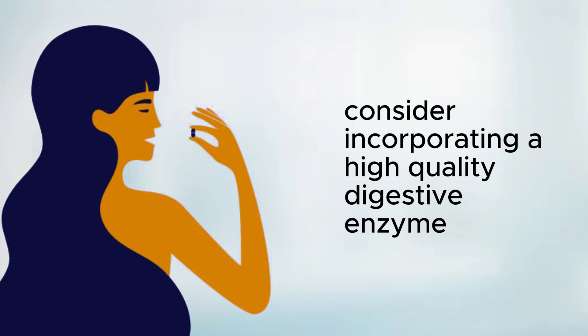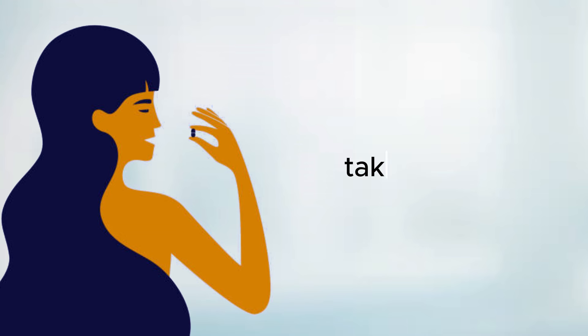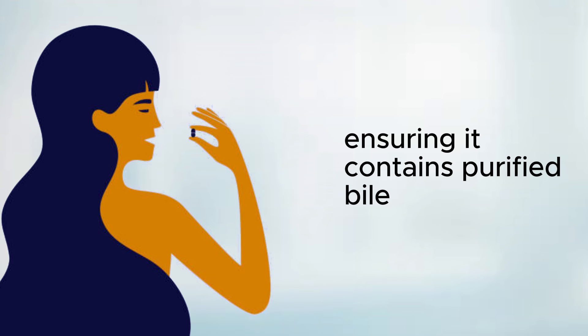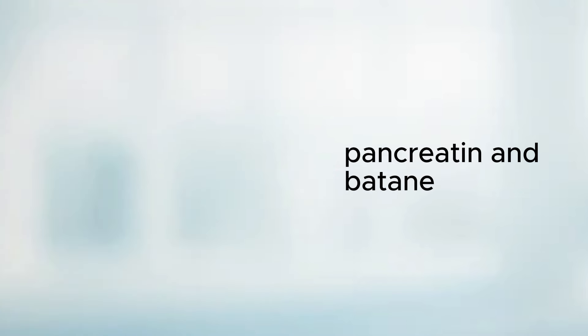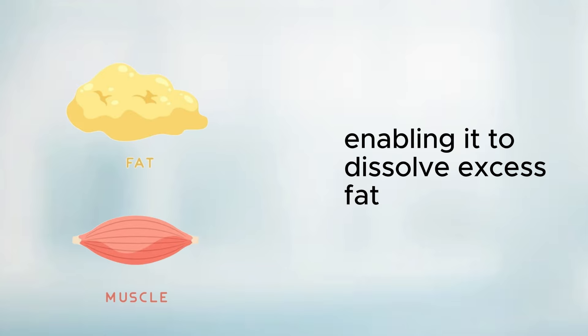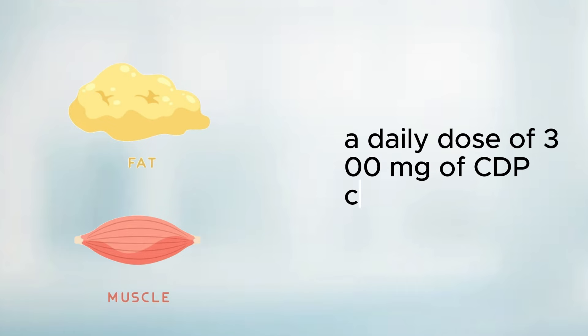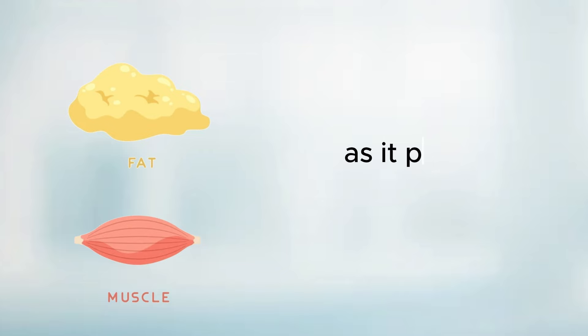Two, consider incorporating a high-quality digestive enzyme supplement into your daily routine. Take it on an empty stomach one hour prior to each meal, ensuring it contains purified bile, pancreatin, and betaine hydrochloride. These enzymes help thin up the bile in your liver, enabling it to dissolve excess fat and cleanse the organ. Additionally, a daily dose of 300 mg of CDP choline is recommended, as it plays a crucial role in enhancing the quality of your bile, the detergent responsible for breaking down fat and eliminating it from your liver.